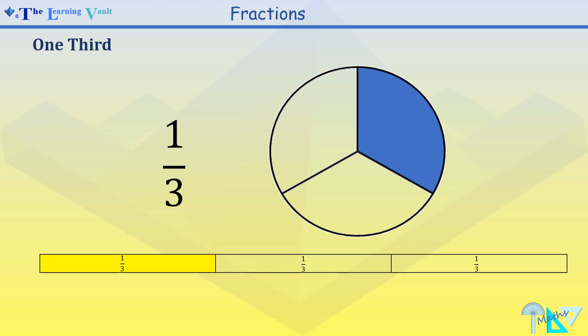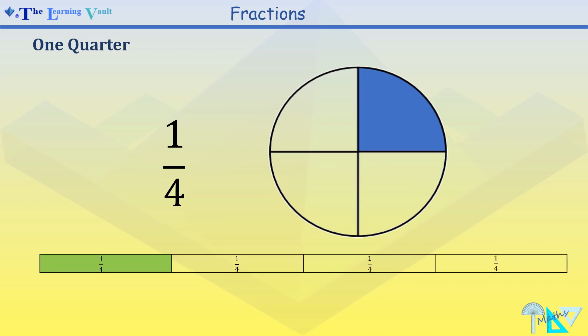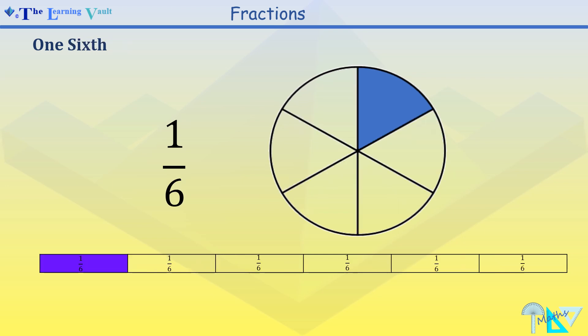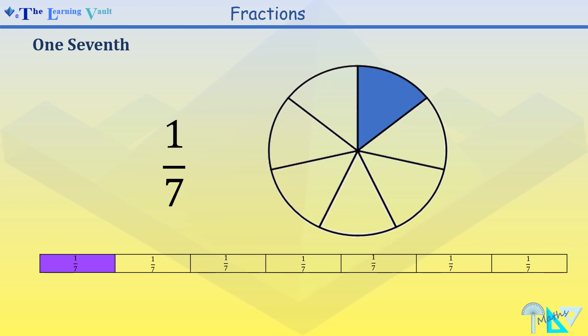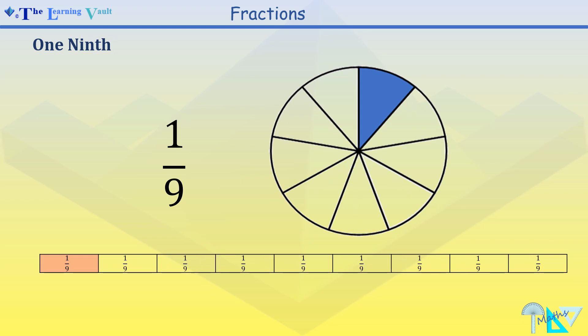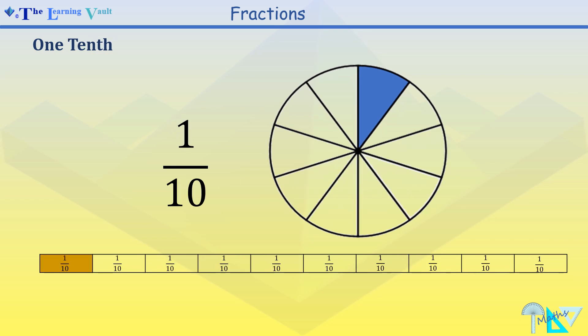These shapes represent one third. These shapes represent one quarter. These shapes represent one fifth. These shapes represent one sixth. These shapes represent one seventh. These shapes represent one eighth. These shapes represent one ninth. And these shapes represent one tenth.